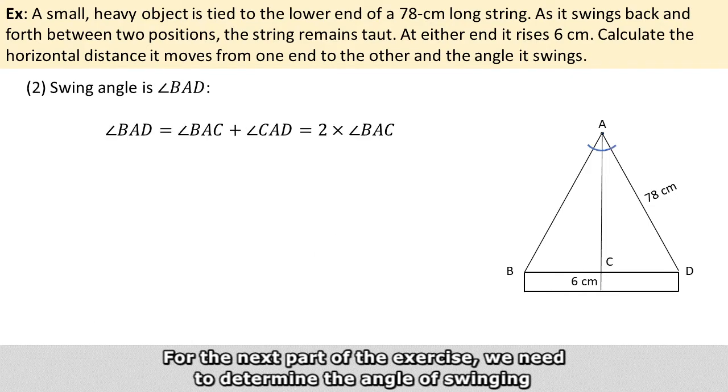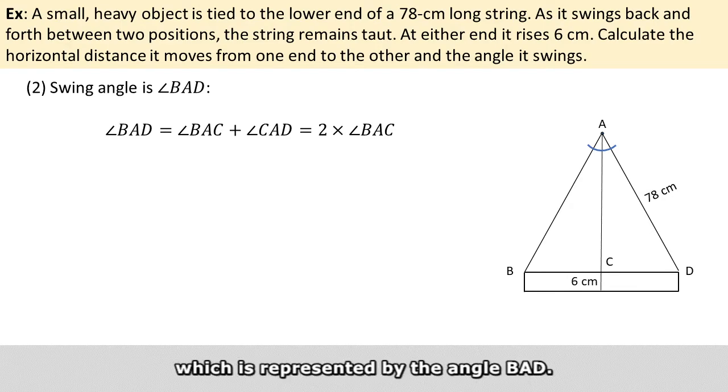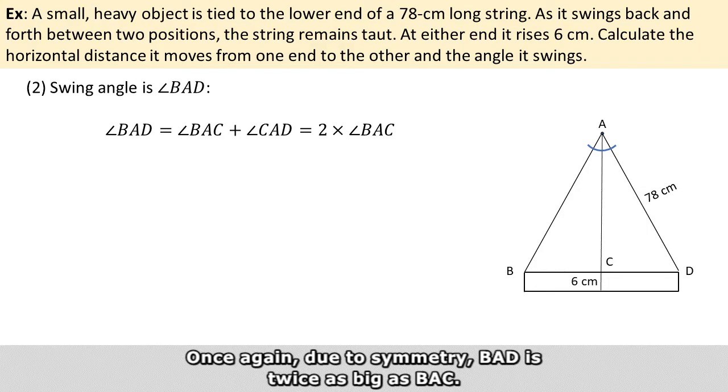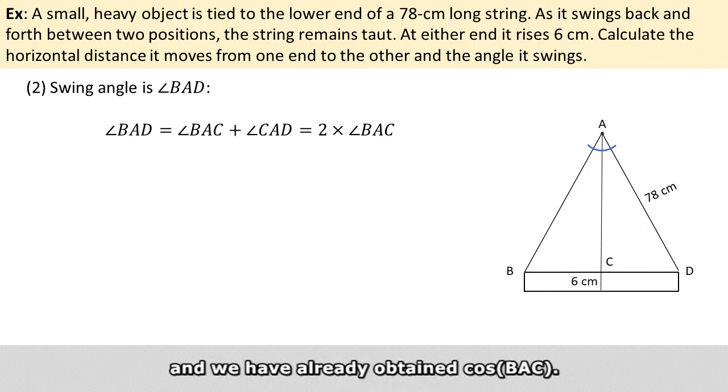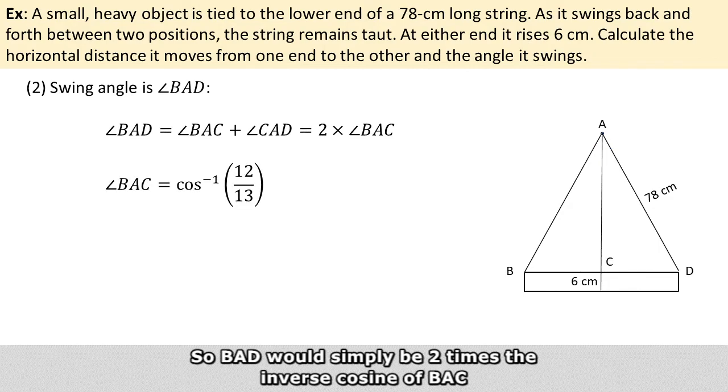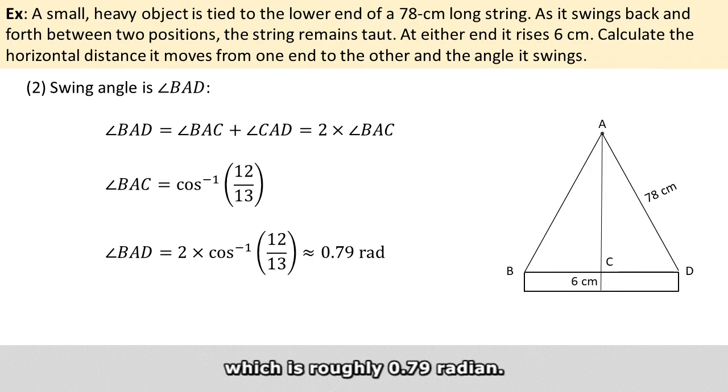And for the next part of the exercise, we need to determine the angle of swinging, which is basically represented by the angle of BAD. Once again, due to symmetry, BAD is twice as big as BAC. And we have already obtained cosine of BAC earlier. So BAD will simply be 2 times the inverse cosine of BAC, which is roughly 0.79 radian.